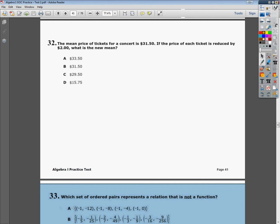The mean price of tickets for a concert is $31.50. If the price of each ticket is reduced by $2, what is the new mean?